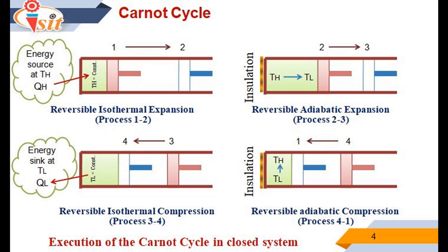The next process is reversible adiabatic expansion, process 2 to 3. At state 2, the reservoir that was in contact with the cylinder head is removed and replaced by insulation so that the system becomes adiabatic. The gas continues to expand slowly, doing work on the surroundings, until its temperature drops from TH to TL at state 3. The piston is assumed to be frictionless and the process to be quasi-equilibrium, so the process is reversible as well as adiabatic.